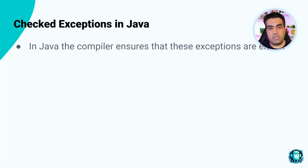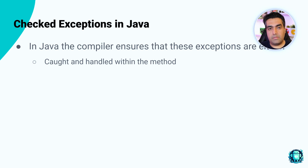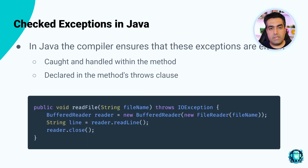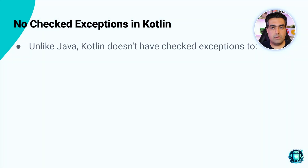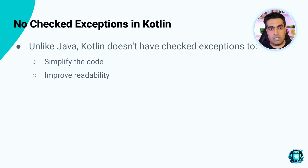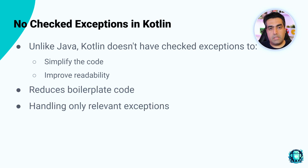Checked exceptions are exceptions that are checked at compile time. The Java compiler ensures that these exceptions are either caught and handled within the method, or declared in the method's throws clause. Unlike Java, Kotlin doesn't have checked exceptions, which simplifies the code and improves readability. Kotlin's approach reduces boilerplate code and lets developers focus on handling only the exceptions that are relevant to their application logic.